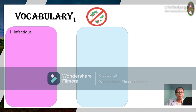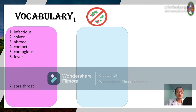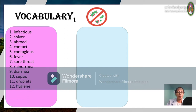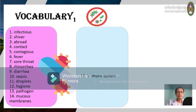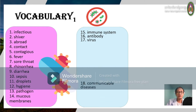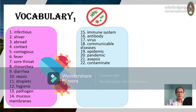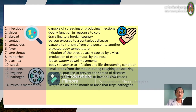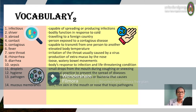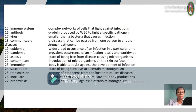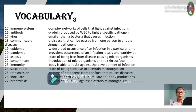The vocabulary for this topic includes: infectious, shiver, abroad, contact, contagious, fever, sore throat, rhinorrhea, diarrhea, sepsis, droplets, hygiene, pathogen, mucous membranes, immune system, antibody, virus, communicable diseases, epidemic, pandemic, asepsis, contaminate, immunity, susceptible, transmission, inoculate, and prophylaxis. These are the definitions of each vocabulary — try to find time to review during your self-directed learning schedules.